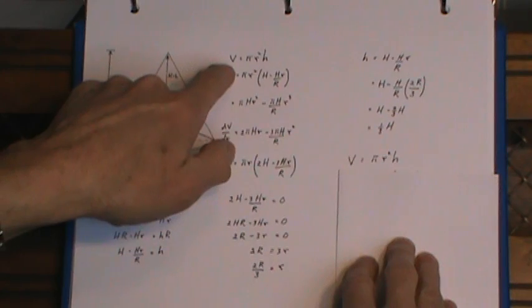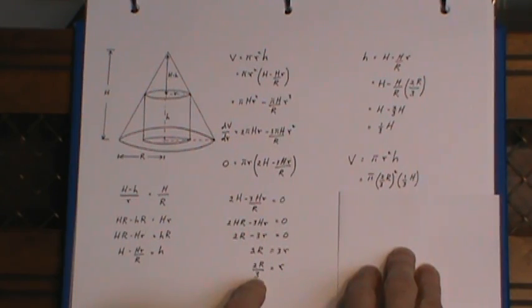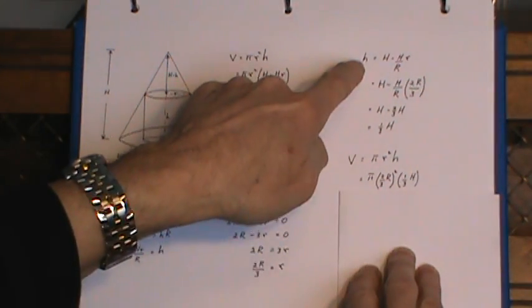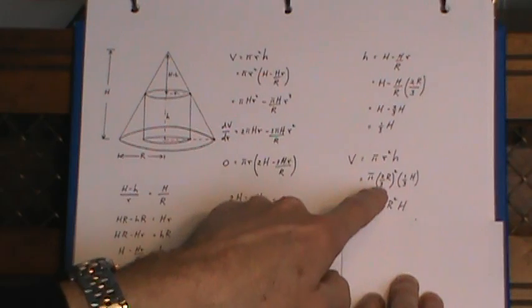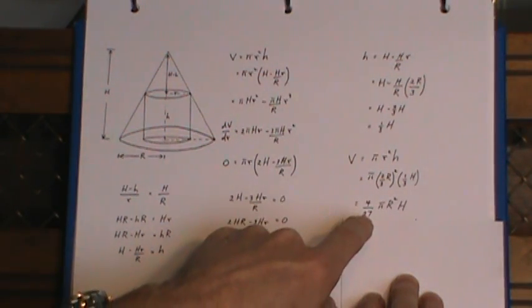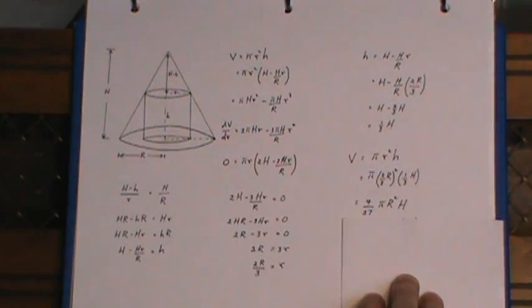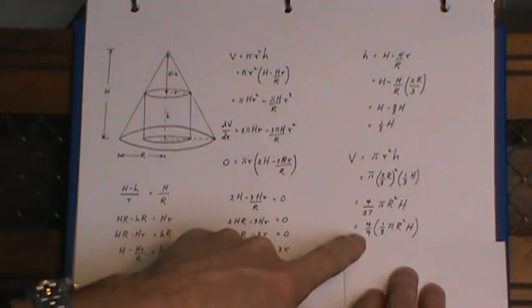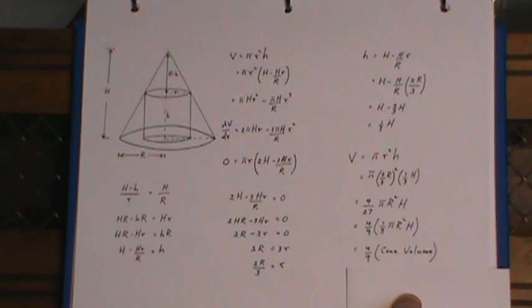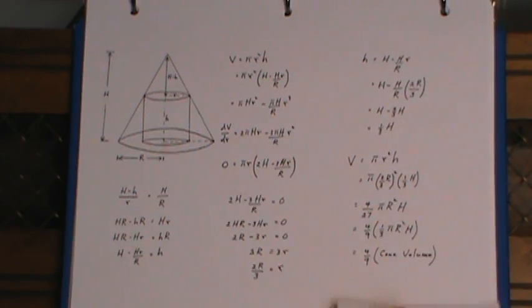So I go back here to the volume expression for the cylinder. Substitute in my substitution for little r and my substitution for little h. I multiplied that out. You see the three is squared times another three, that's how I got the 27 on the bottom, and the two squared gives me the four pi r squared h. And if I factor out, remember we were trying to show that this volume was four-ninths of the volume of the cone. Well, I factored out four-ninths, and this expression right there is the expression for the volume of the cone, one-third pi r squared h.